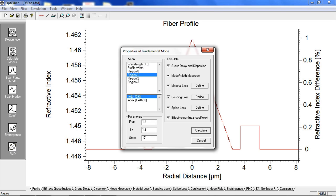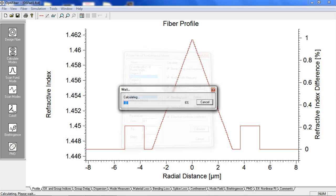Here, the width of region 1, the layer between the core and the outer ring, is to be varied from 0.1 to 3.1, and the number of steps will be set to 30. After the parameters are set, click Calculate.